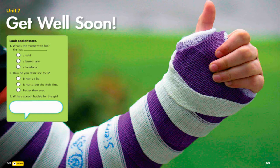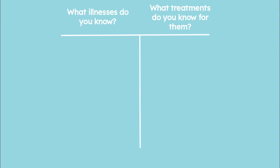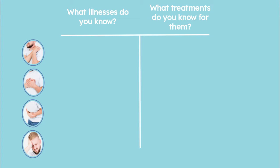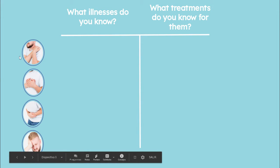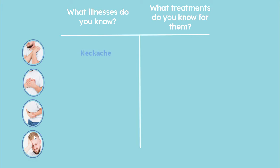After pausing the video, now we're going to continue. What illnesses do you know? There are different illnesses that we usually feel or see that other people have, in different parts of the body. Maybe you can identify the neck ache, heartache, stomach ache, and a headache. Remember, an ache is a strong and hard feeling of disease — not feeling good, feeling bad — in one area of your body.